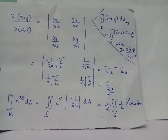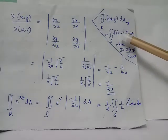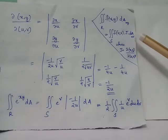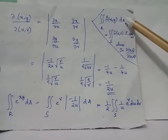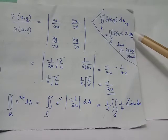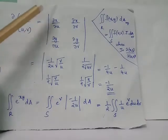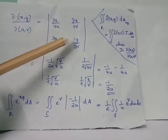To evaluate the double integral over R of f(x,y) in the xy-plane, it is equivalent to evaluate the double integral over S in the uv-plane, transforming f(x,y) to a function of u and v, multiplied by the Jacobian, with dA replaced by du dv. The Jacobian is evaluated using the determinant: |∂x/∂u  ∂x/∂v; ∂y/∂u  ∂y/∂v|.